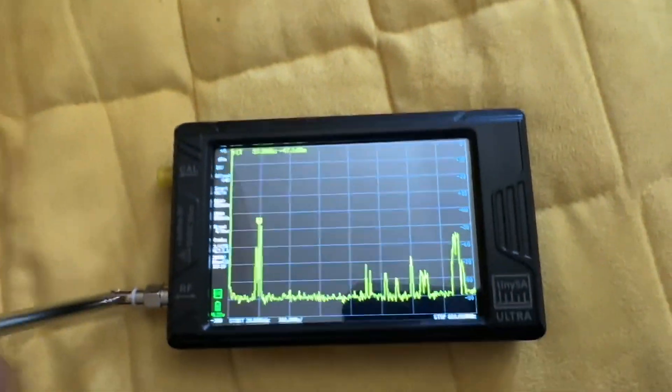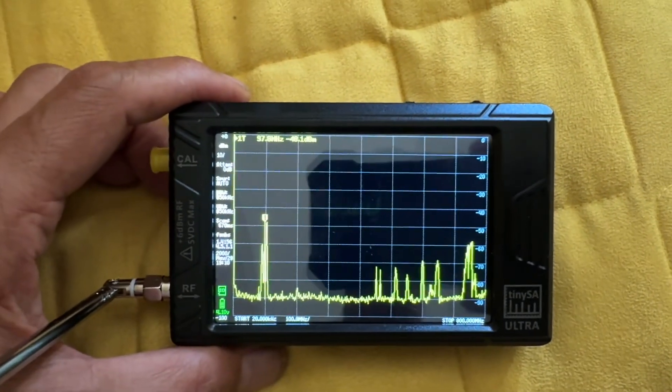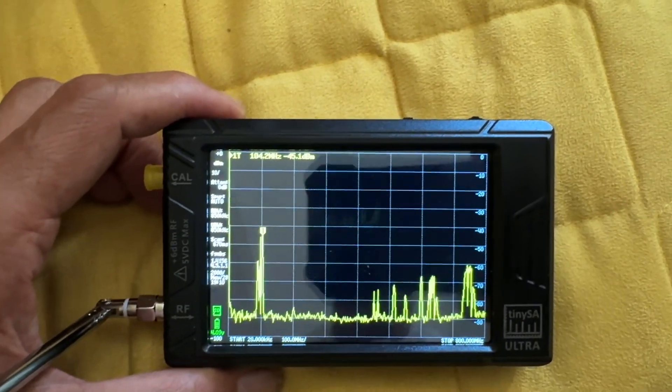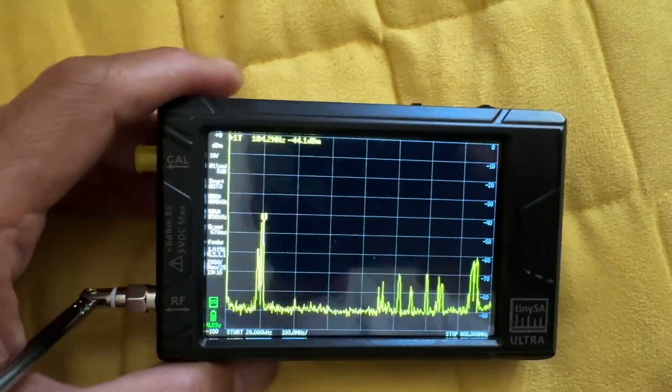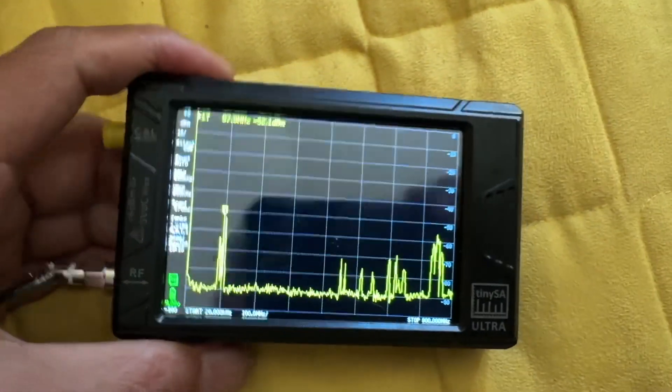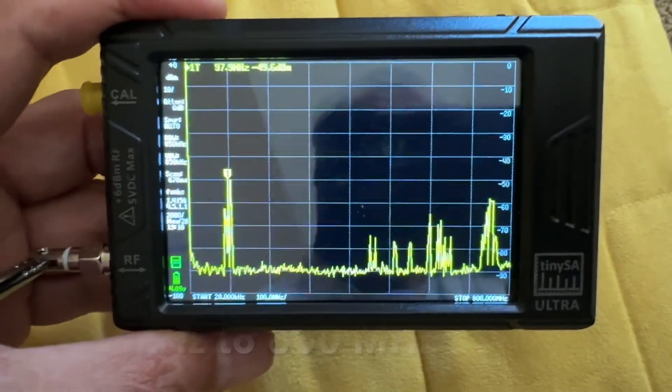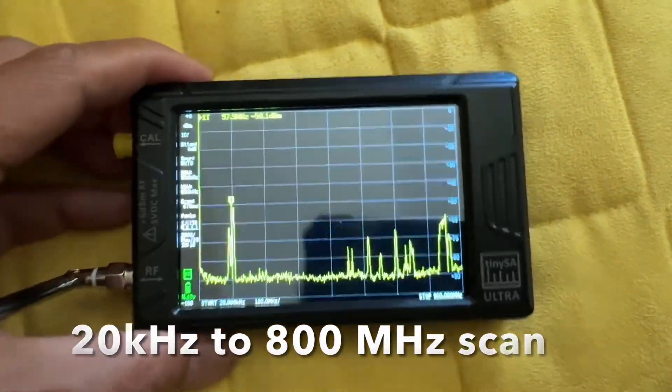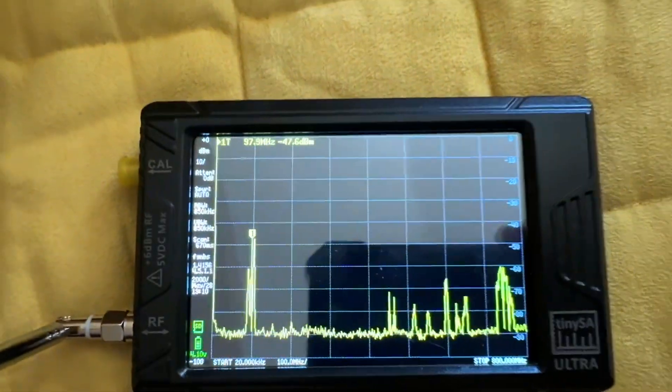This is a radio frequency spectrum analyzer and it can go all the way up to gigahertz range. This particular model goes up to about 800 megahertz. I turned it on and what you're looking at there is the RF bands from radios and other devices in the vicinity.